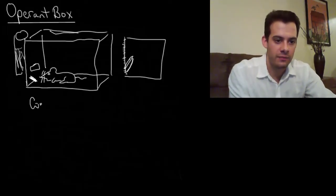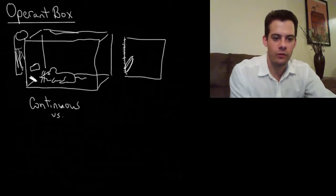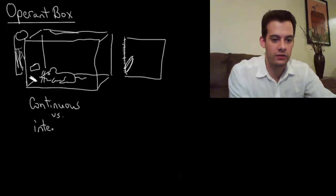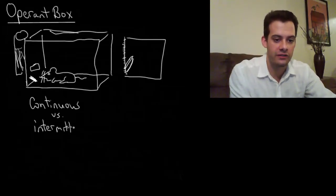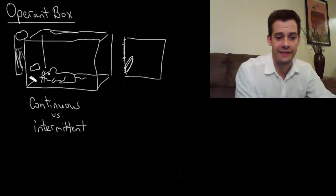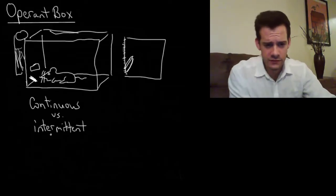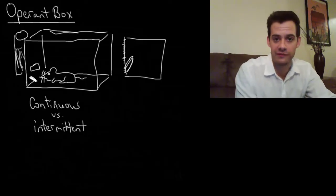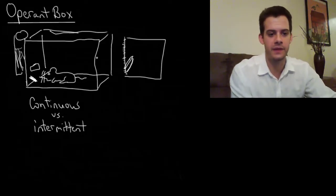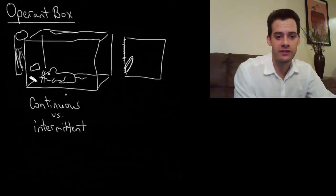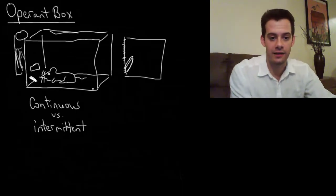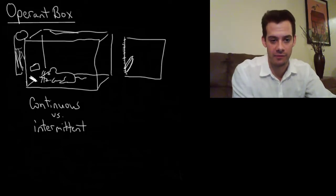Skinner could compare continuous reinforcement, where he reinforces the animal every time the lever is pressed, to intermittent reinforcement, which refers to only rewarding the animal at certain times — for a certain number of lever presses or over a certain period of time. Now let's look at some of the more detailed schedules of reinforcement that Skinner used to track how they influenced behavior.